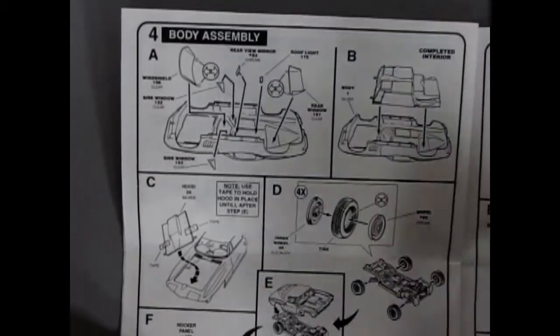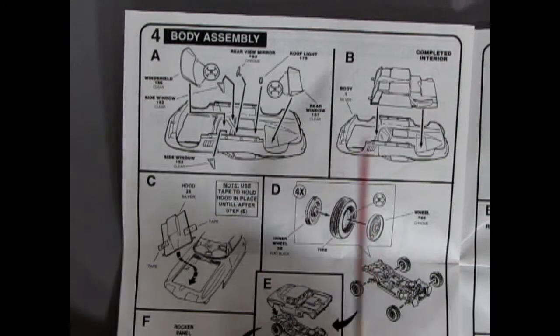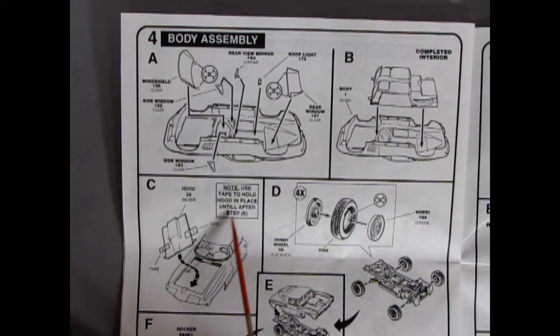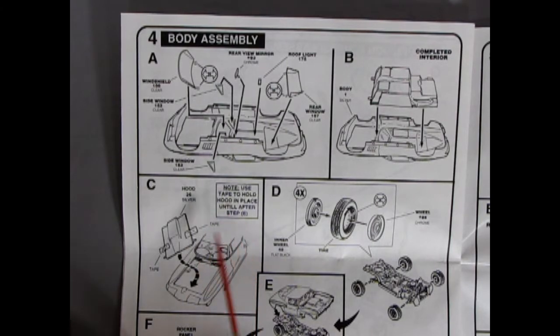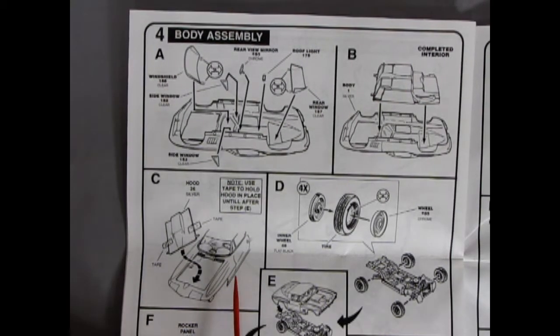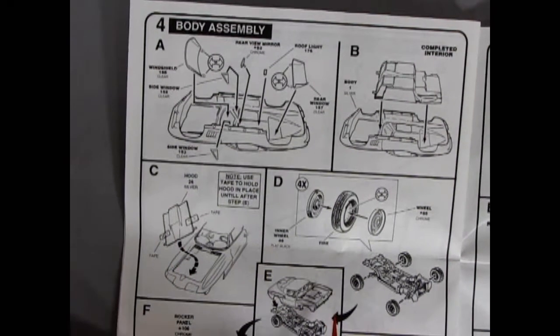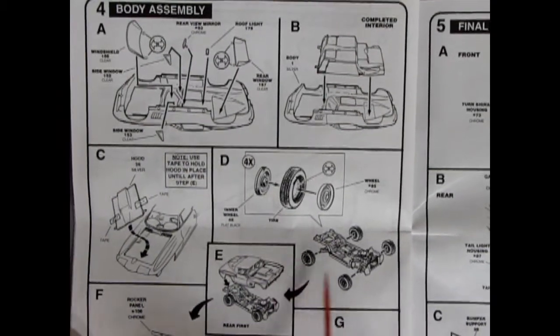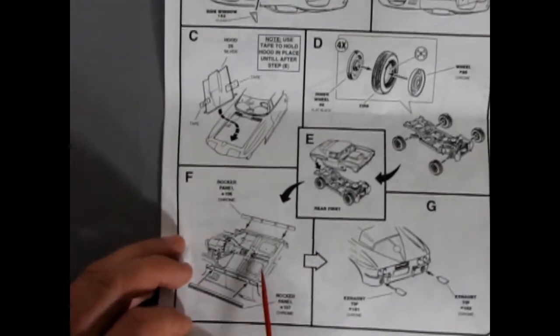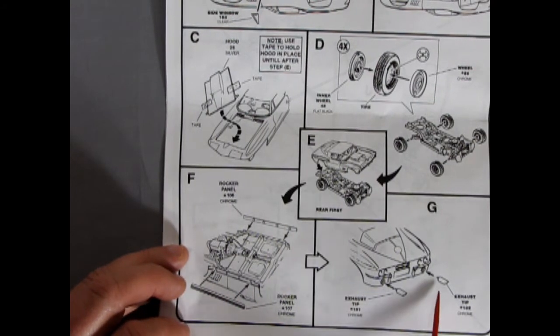Then we finish our suspension here with the lower piece of the front suspension. Then our coils, tie rod, and steering linkage going on to that chassis. Quite a lot of steps to this. There's our glass going into the body. And you even get a roof light in there. Completed interior dropping in. Then it says, note, use tape to hold hood in place until after step E. So of course, that's going to be when the chassis goes in. There's a couple little bumps in those fenders, which will lock into the pins on your hood. And there's your wheels going together. Wheels and tires. Body. And then you've got chrome rocker panels that go on the sides. And then your exhaust pipes going into the back.